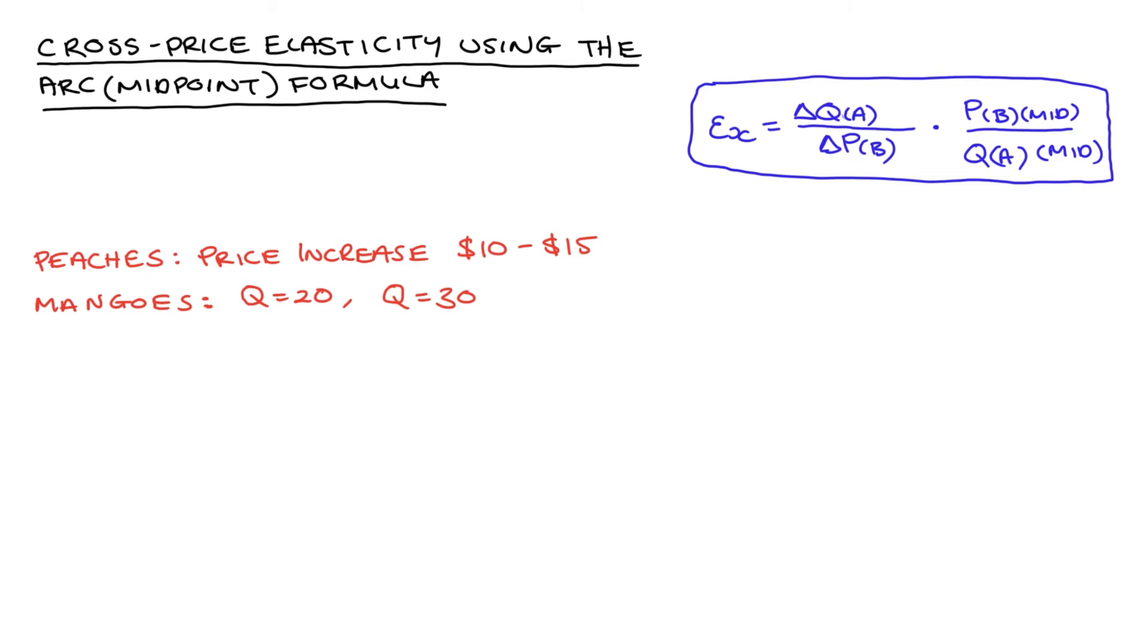let's imagine that the price of peaches increases from $10 to $15, and as a result of this price change, the quantity demanded of mangoes increases from $20 to $30.